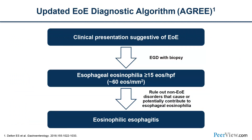This is the updated EOE diagnostic algorithm from the AGREE conference. The patient presents with symptoms suggestive of eosinophilic esophagitis — esophageal dysfunction type symptoms. They get an EGD with biopsy and are found to have esophageal eosinophilia with greater than or equal to 15 eosinophils per high-power field, which is about 60 eosinophils per millimeter squared. Then you rule out non-EOE disorders that can potentially cause or contribute to esophageal eosinophilia. If those are ruled out and the other features are present, you can make the diagnosis of eosinophilic esophagitis.